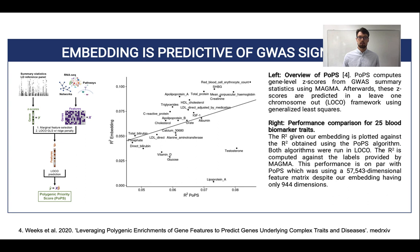Next, we wanted to check whether our embedding is predictive of GWAS signals. This has been previously done by POPS, where GWAS summary statistics were aggregated to the gene level and then predicted from a gene feature matrix, which was created from gene networks, RNA-seq, and PolyFun. We could observe that our much smaller embedding is performing on par or slightly better compared to the algorithm designed in the POPS paper.